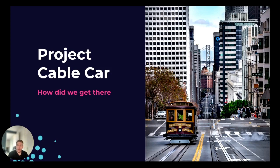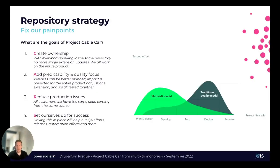So we needed to fix this. After DrupalCon North America in Portland, we were working remotely with a couple of colleagues in San Francisco, discussing these pain points, and we came up with Project Cable Car — the working title named after the famous cable cars riding around San Francisco. We set ourselves out to fix these pain points. One of the bigger things we wanted was ownership. We were all working on OpenSocial as a product, but it felt like we were siloed and focused on solving specific needs instead of enhancing the product.